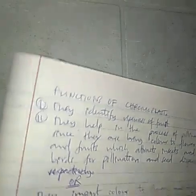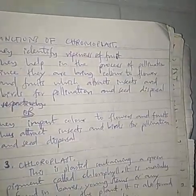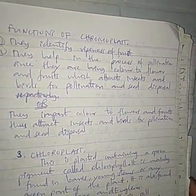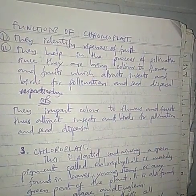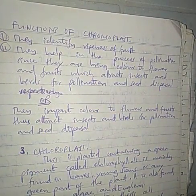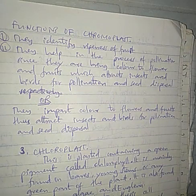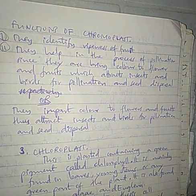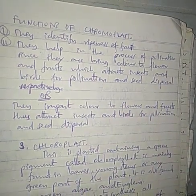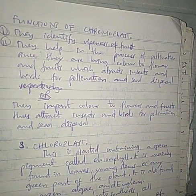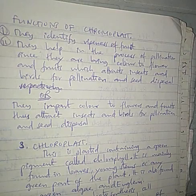The different appearance of flowers is due to Chromoplasts. The functions of Chromoplasts are: they identify the ripeness of fruit, they impart color to flowers, and they help to attract insects and birds for the process of pollination.